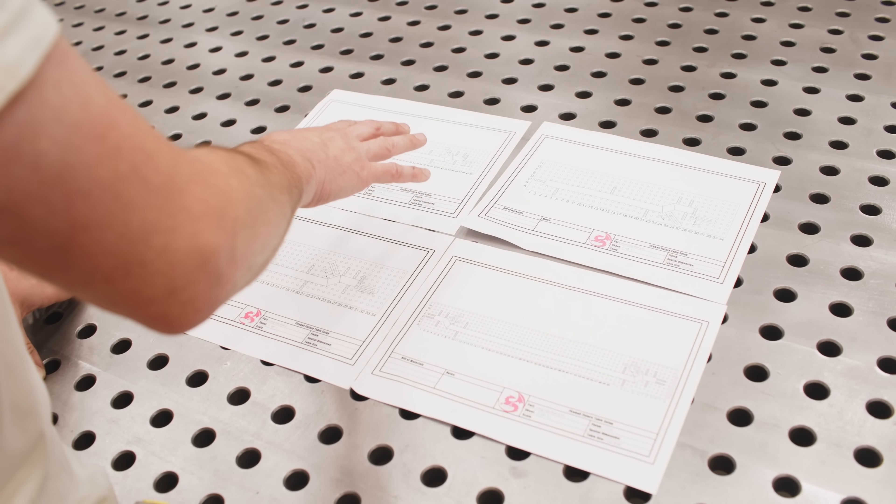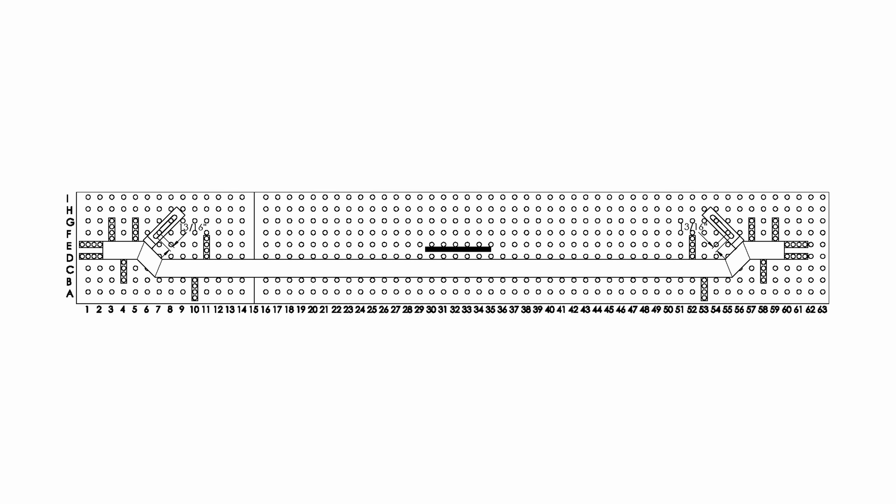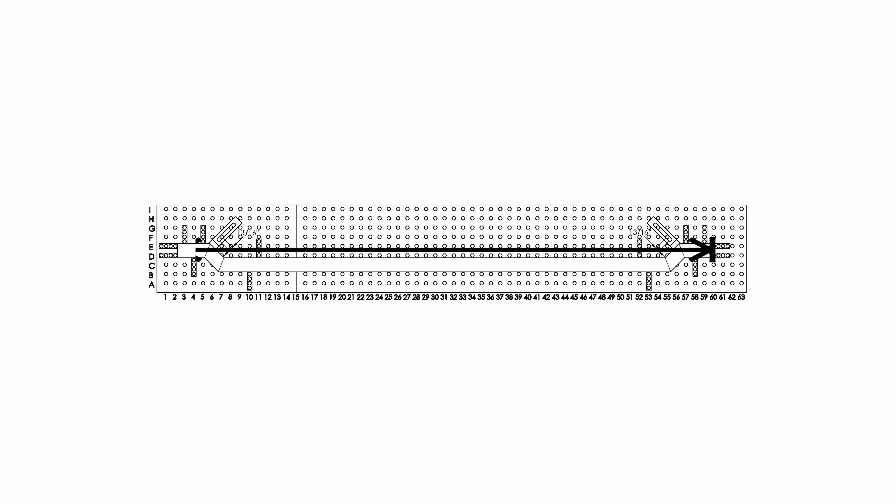So I think we should start with the most complicated first. What makes this one difficult is its overall length. As you can tell, we're going to be using the full length of the big table, and then we're going to have to add on a short section to be able to fixture this.